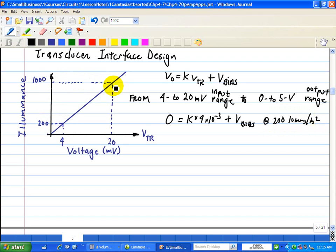Now, let's do the one for 1,000, and you see it corresponds to 20 millivolts. So, corresponding to 20 millivolts, that's the maximum range in this case, is a 5 volt as our output coming out of the interface circuit. So, that's K times 20 times 10 to the minus 3 plus V bias. And this corresponds to 1,000 lumens per meter squared.